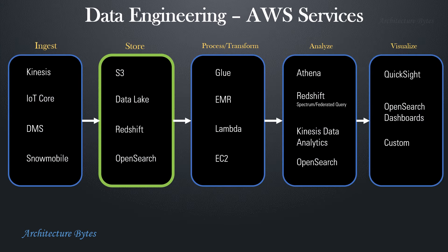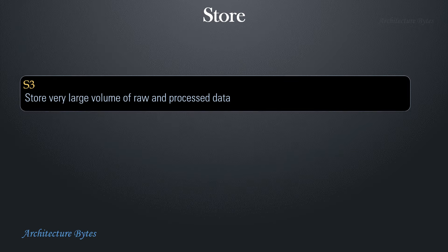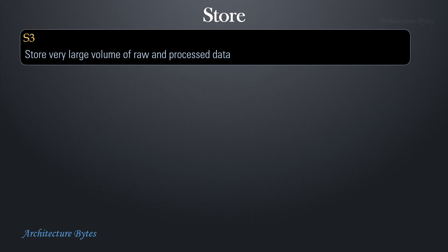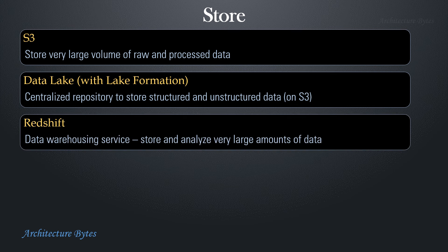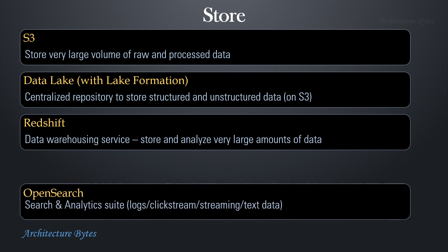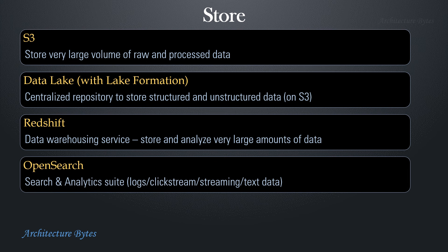Storage: S3 can be used to store very large volumes of raw and processed data. A data lake is simply a centralized repository to store structured and unstructured data. On AWS, S3 is used as the underlying platform for data lakes. Lake Formation can be used to build, manage, and secure data lakes. Redshift is a data warehousing service to store and analyze data using SQL queries. OpenSearch is a search and analytics service suitable for analyzing logs, streaming, and text data.